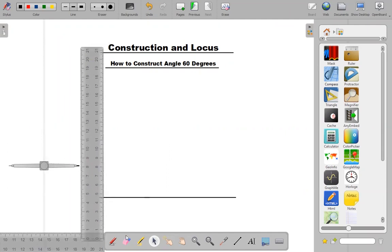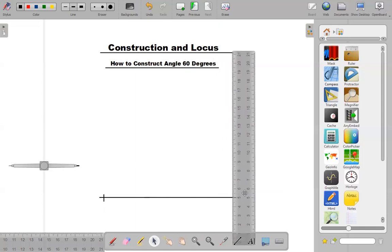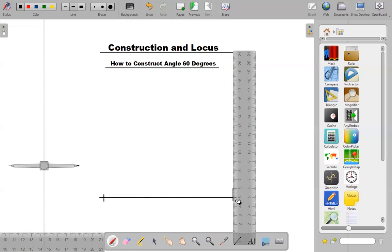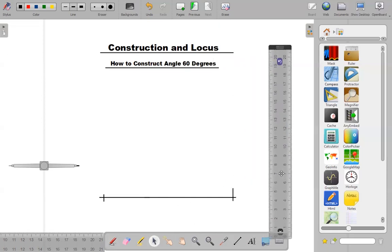Let me put a reference here and call it point A, and I'll put a reference here and call it point B. So this is line AB. This is point A and this is point B. Now I want my 60 degrees to be at point A.